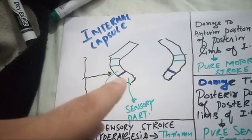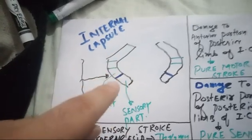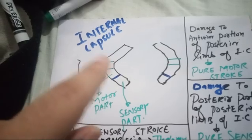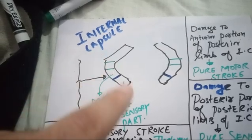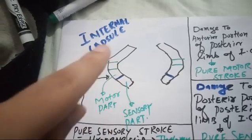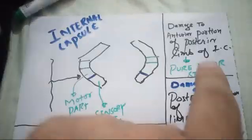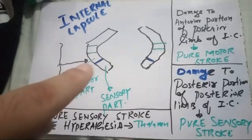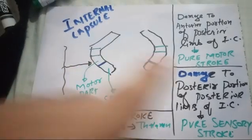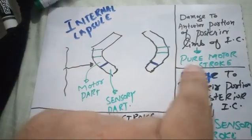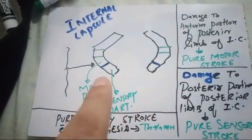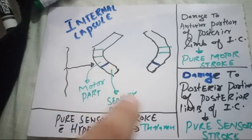The posterior portion of posterior limb is the sensory part. So if there is damage to the anterior portion of posterior limb of internal capsule, that will cause pure motor stroke. The sensory portion is intact because it lies in the posterior portion.